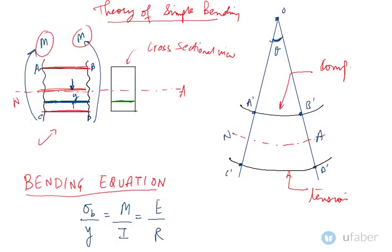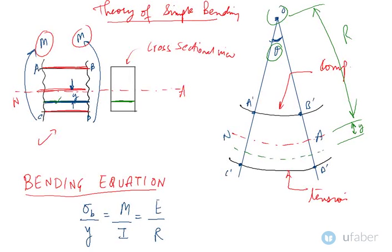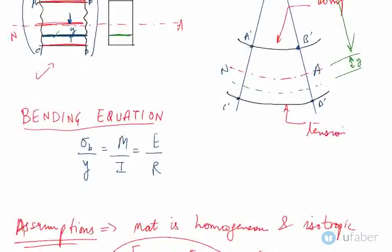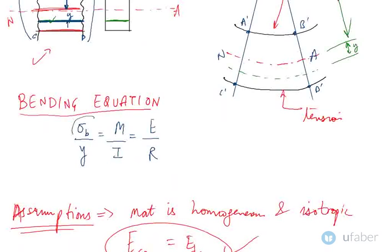This intermediate layer is at a distance Y. The radius of this arc from the center to the neutral axis is R. So R is the radius of curvature to the neutral axis, theta is the angle subtended by the beam at the center O, and sigma_B is the bending stress that is produced or developed in the material.